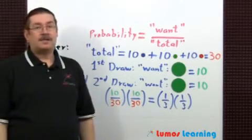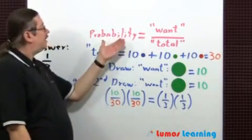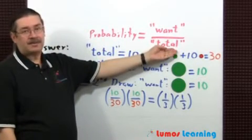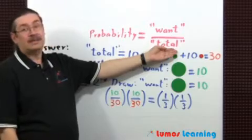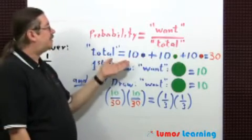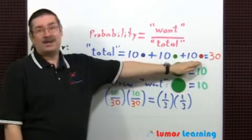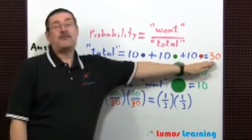To answer this question, the first thing we need to realize is that probability is just the number of ways of getting what we want divided by the total number of possible outcomes. Let's find out what the total is first. Just add up the number of marbles in the bag. Ten blue plus ten green plus ten red is equal to a total of 30 marbles in the bag.